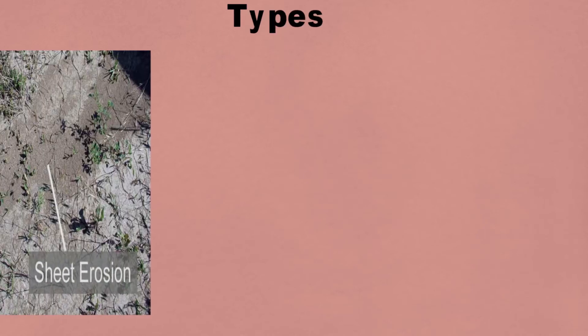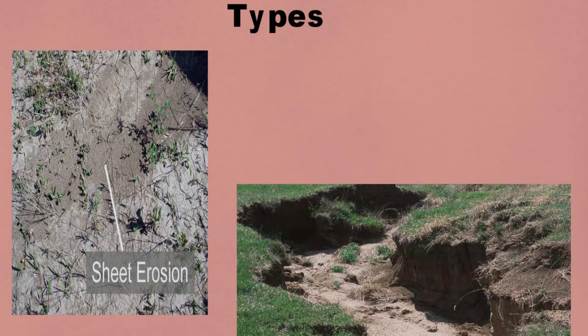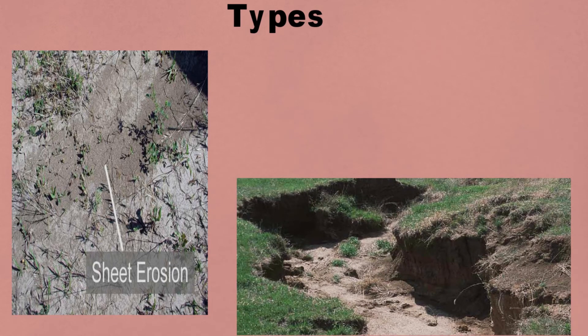Sheet erosion: removal of a thin layer of topsoil due to water runoff. Gully erosion: surface runoff is very high, forming small valleys.